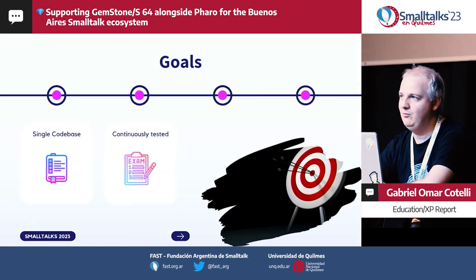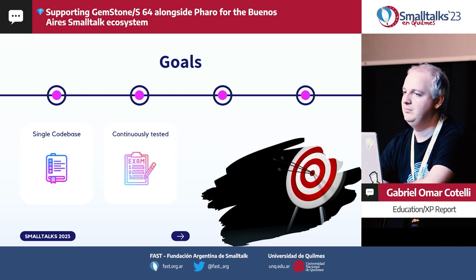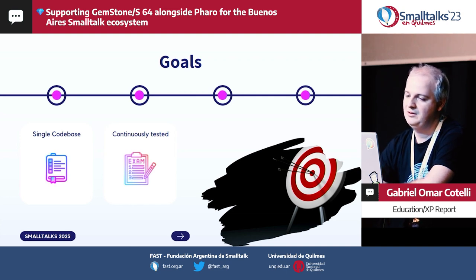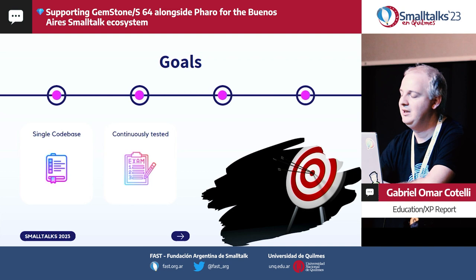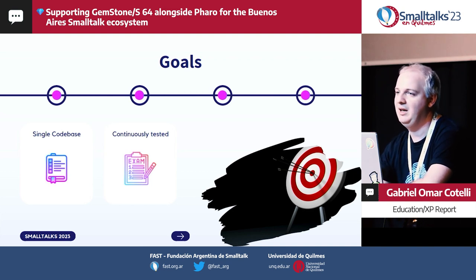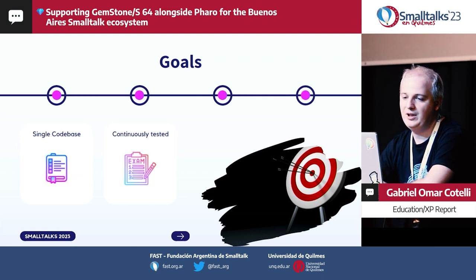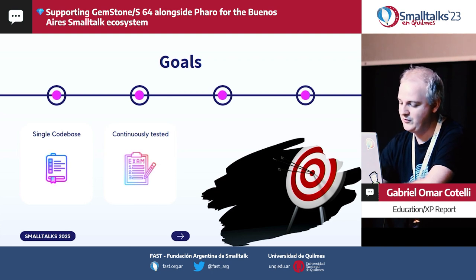We had some goals based on previous experience porting code between Pharo, VA Smalltalk, and other versions of GemStone. We know we want a single code base, and we need to start continuously testing on all the platforms we want to support. Going back and forth, making a change that works in Pharo and later learning it broke in another Smalltalk, is just unproductive. So the two key goals are: a single code base, and continuous testing on all supported platforms.